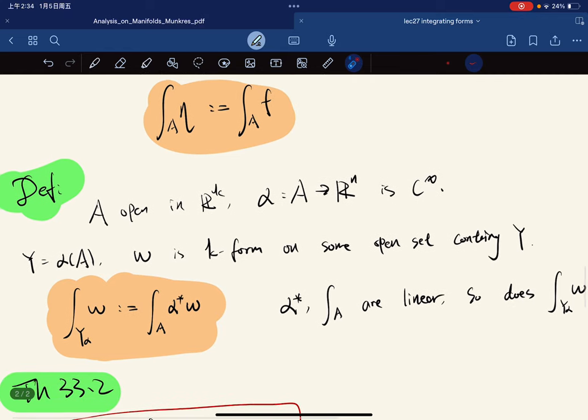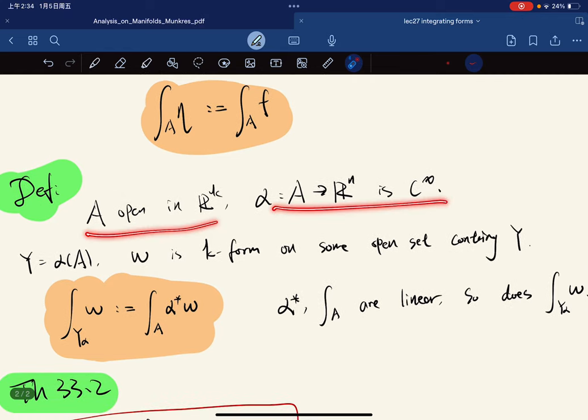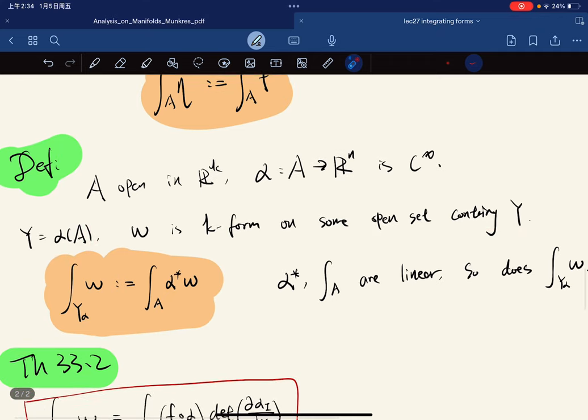And then if A is open, then there's a smooth map, y is alpha of A, and omega is a k-form of some open set containing the image. Then we define the integral of omega over the parameterized manifold y alpha.